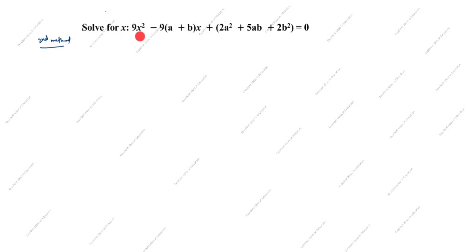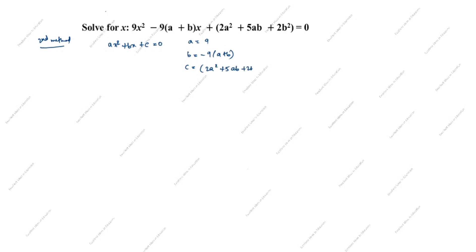Second method: solve using the quadratic formula. The standard form is ax²+bx+c = 0. In this question, a = 9, b = −9(a+b), and c = 2a²+5ab+2b². Now using the quadratic formula: x = [−b ± √(b²−4ac)] / 2a. First we will compute b²−4ac and simplify.